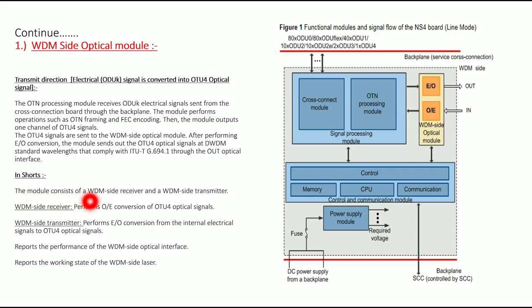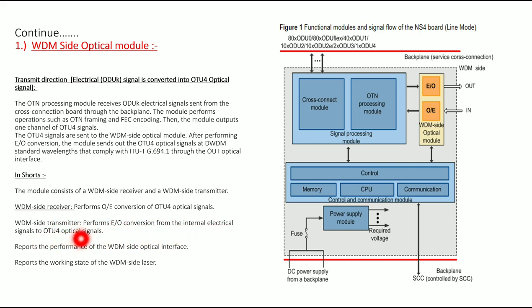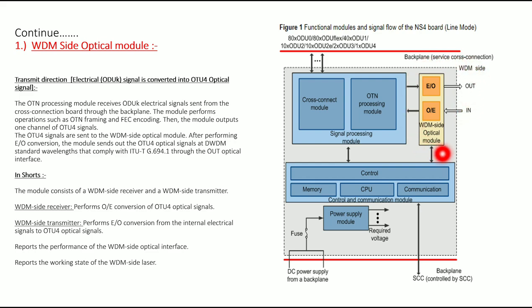In short, the WDM optical module consists of the WDM side receiver and the WDM side transmitter. The WDM side receiver performs optical to electrical conversion of OTU4 optical signals, and the WDM side transmitter performs electrical to optical conversion from internal electrical signals to OTU4 optical signals. These optical modules also monitor the performance of the WDM side interface — both the output and input interfaces — and show the working state of the laser for these two ports.